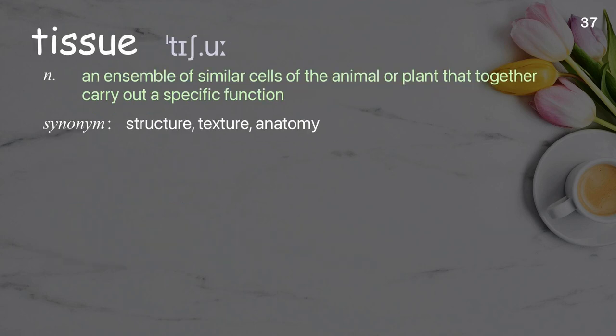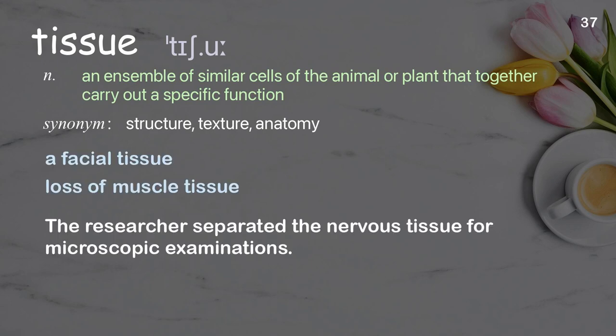Tissue. An ensemble of similar cells of the animal or plant that together carry out a specific function. Examples: a facial tissue, loss of muscle tissue. Sentence: The researcher separated the nervous tissue for microscopic examinations.